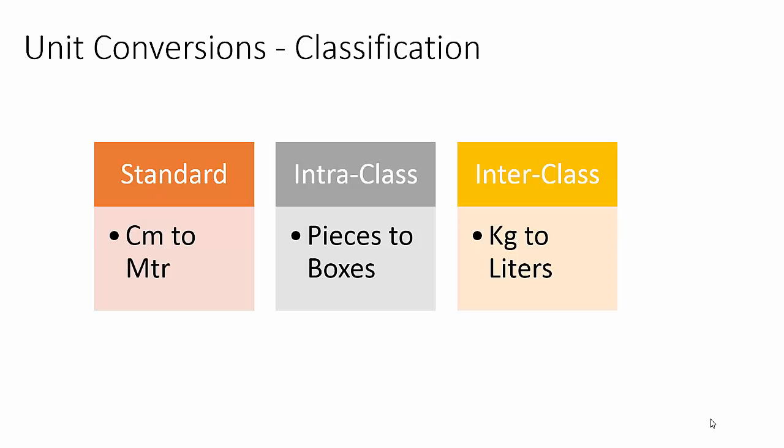Unit conversion can be classified into three types: standard conversion, intra-class conversion, and inter-class conversion. Standard conversions set up conversion rules that apply for all products; they can only be set up for units of measure in the same unit class. Intra-class conversions set up product-specific conversion rules for units of measure in the same unit class. For example, you can set up a conversion rule for a product that converts pieces to boxes, and pieces and boxes both reside in the quantity unit class.